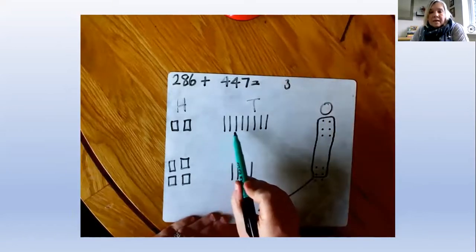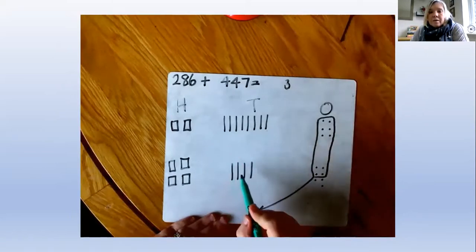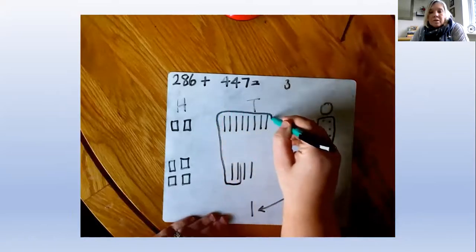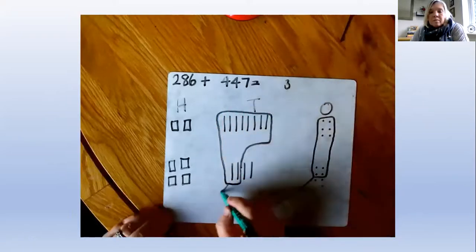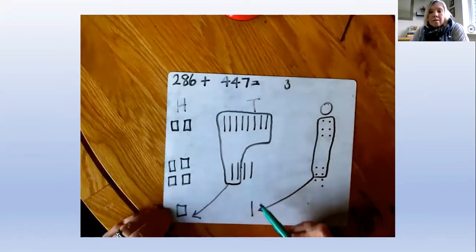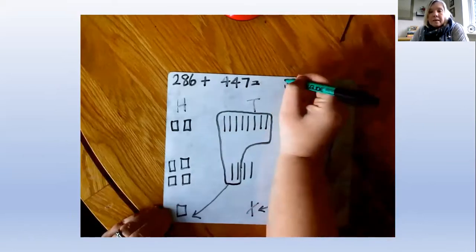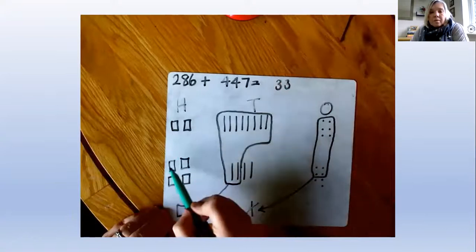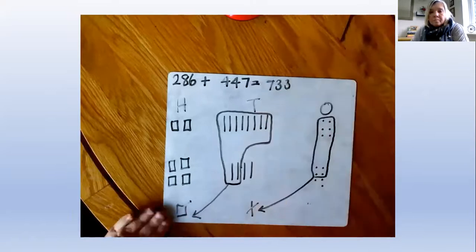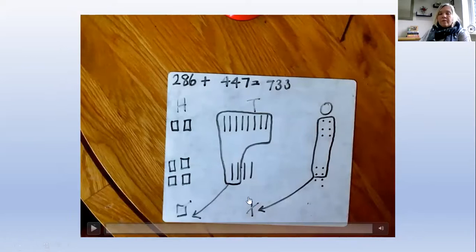Now I'm counting my tens. I've got 8, 9, 10. I need to stop and exchange those 10 tens for 100. And the remaining, I've got 2, 3 tens remaining. Count up my 100s. I've got 7 hundreds all together. So important to remember that you've exchanged. Remember those additional exchanges that you've made.